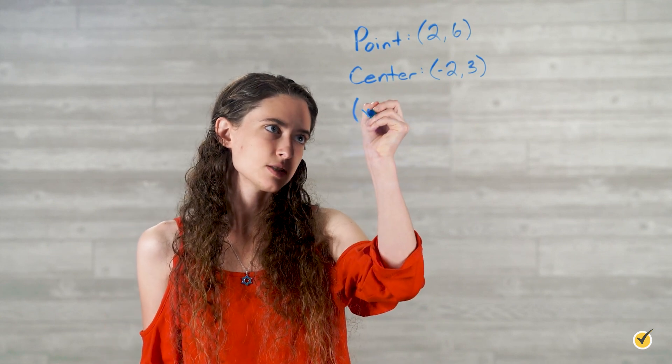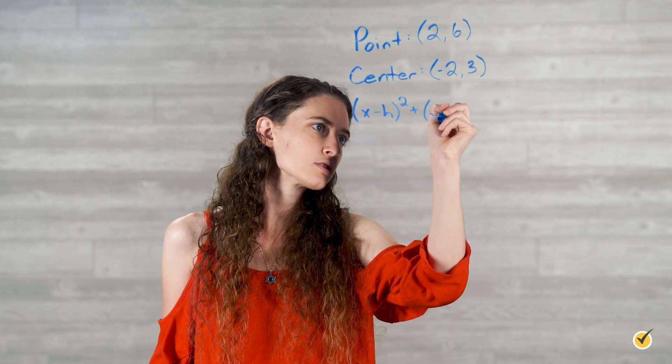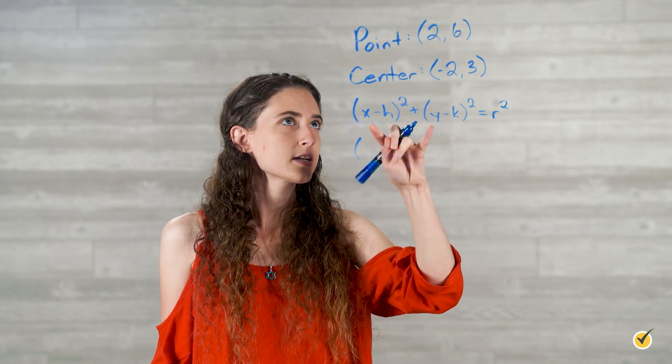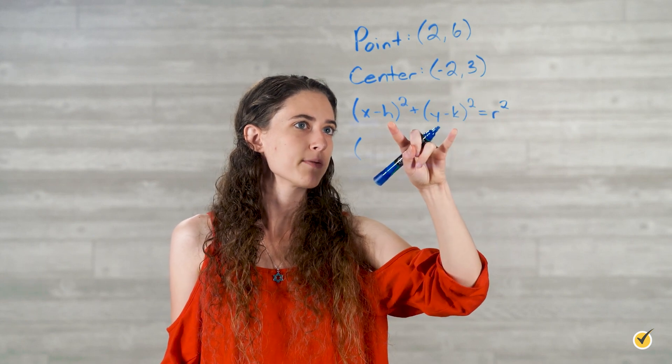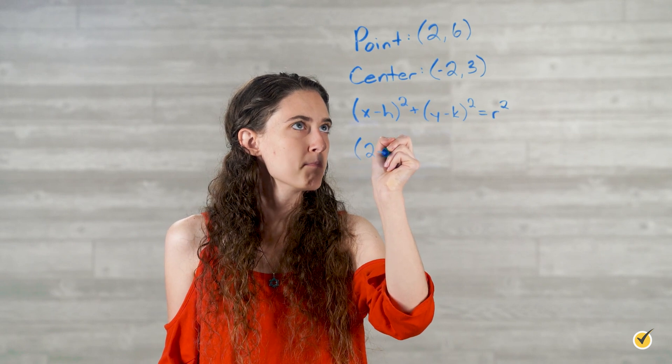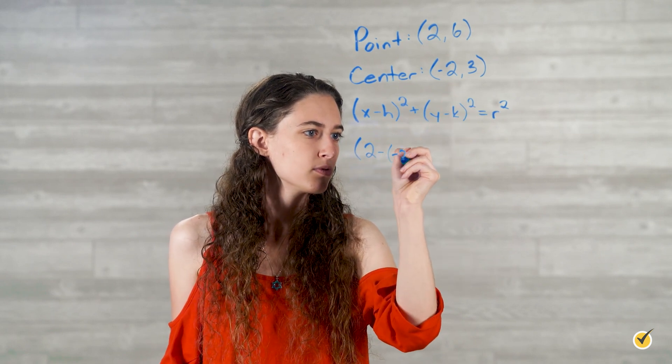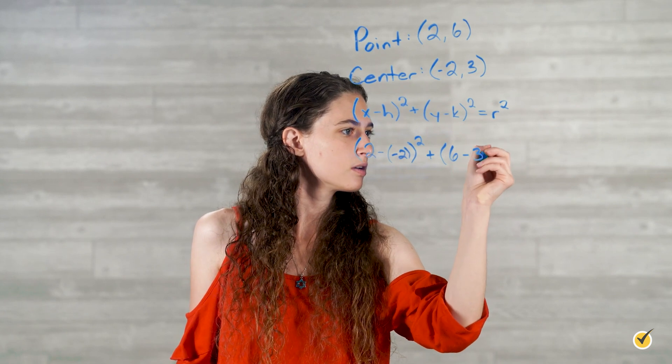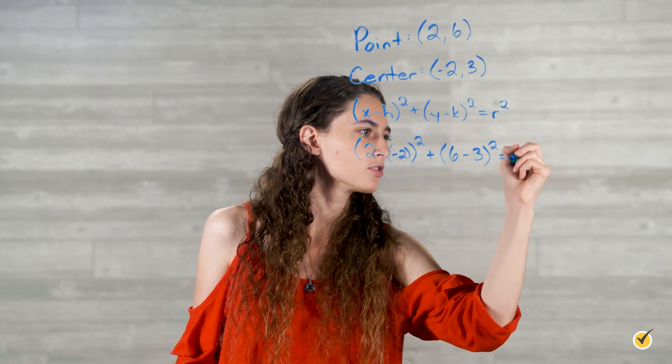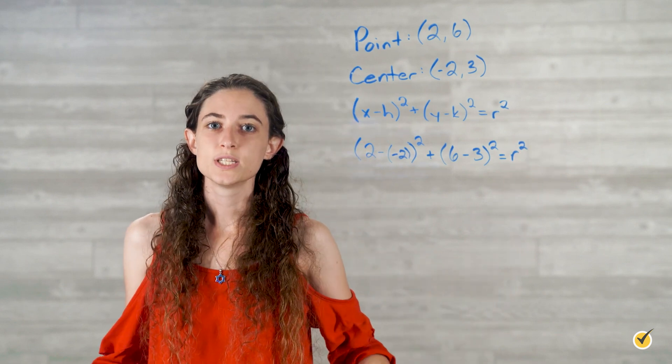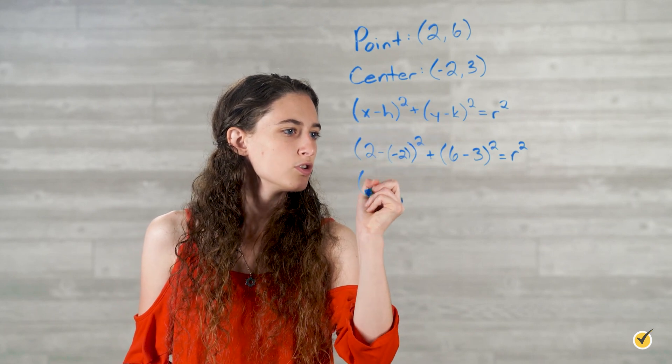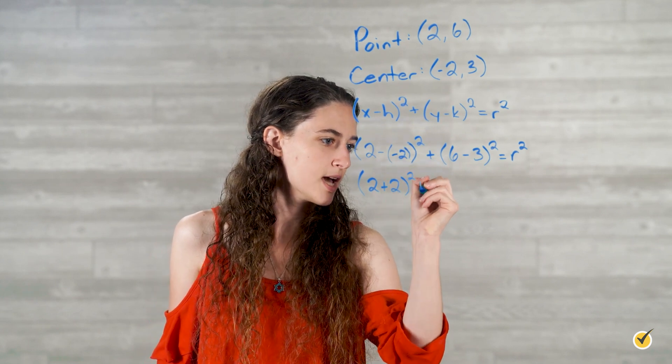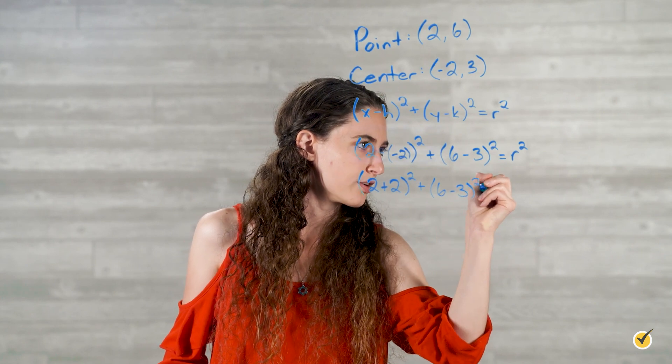So the formula for a circle is x minus h squared plus y minus k squared equals r squared. So our x and y comes from our point that we're given and our center is our h and k. So x is going to be 2 minus h is -2 squared plus y is 6 minus 3 squared. And we're not given r, so it equals r squared. We deal with our subtracting a negative problem to get this. 2 minus -2 is the same as 2 plus 2, so we just replace that minus a negative with a plus sign. And then everything else stays the same: 6 minus 3 squared equals r squared.